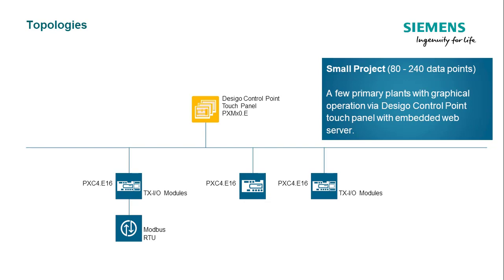A small project can also consist of multiple primary automation stations with Modbus RTU integration, which is graphically operated by a DSEGO control point with embedded web server.